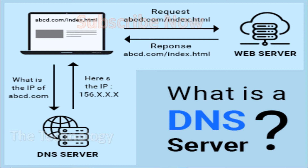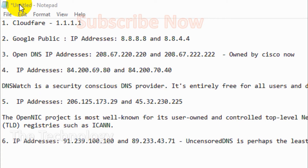One of the most used public DNS servers is Google. I believe most people know the Google public DNS server. I have listed five public DNS servers I am describing. The first one I prefer is Cloudflare. Cloudflare is one of the good public DNS servers — personally I use this one in my router. Its IP address is 1.1.1.1.